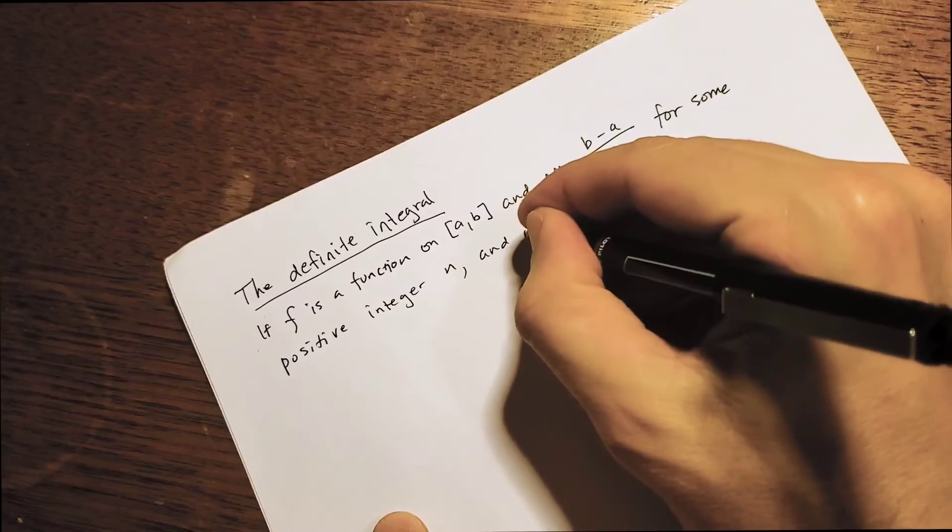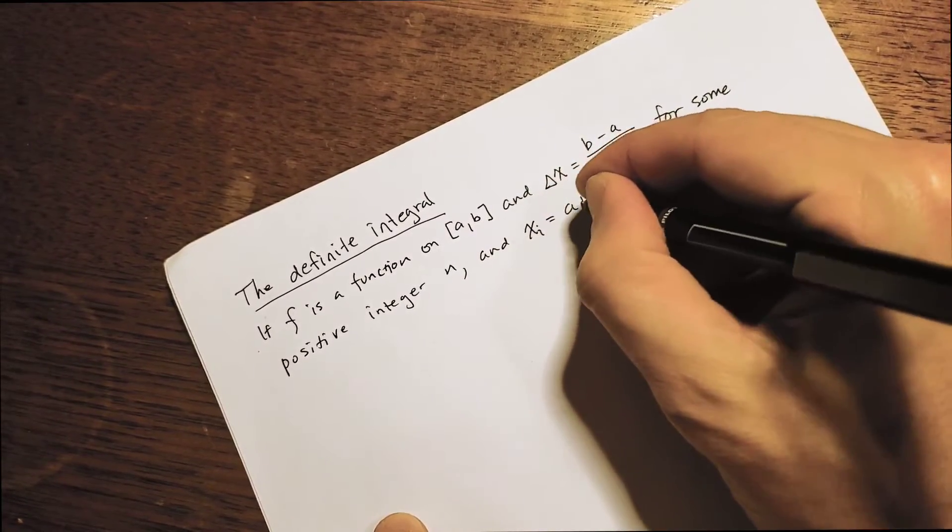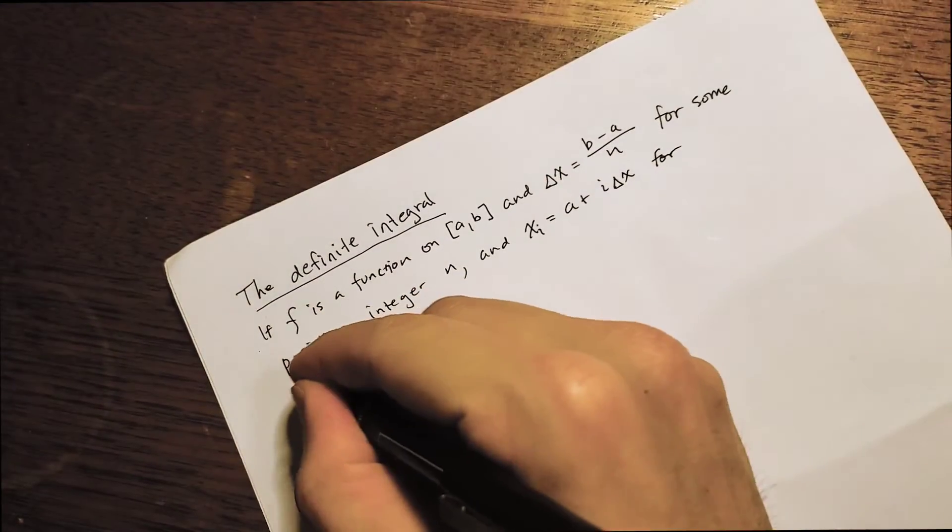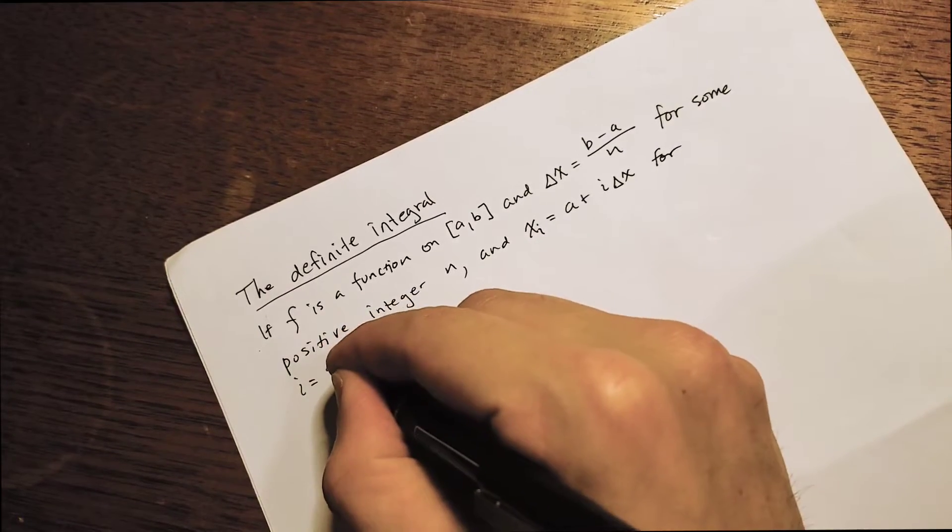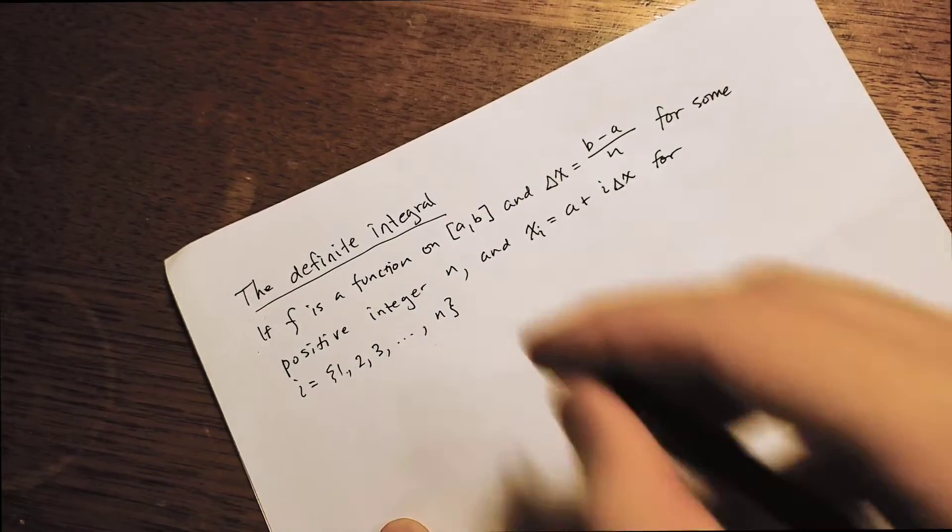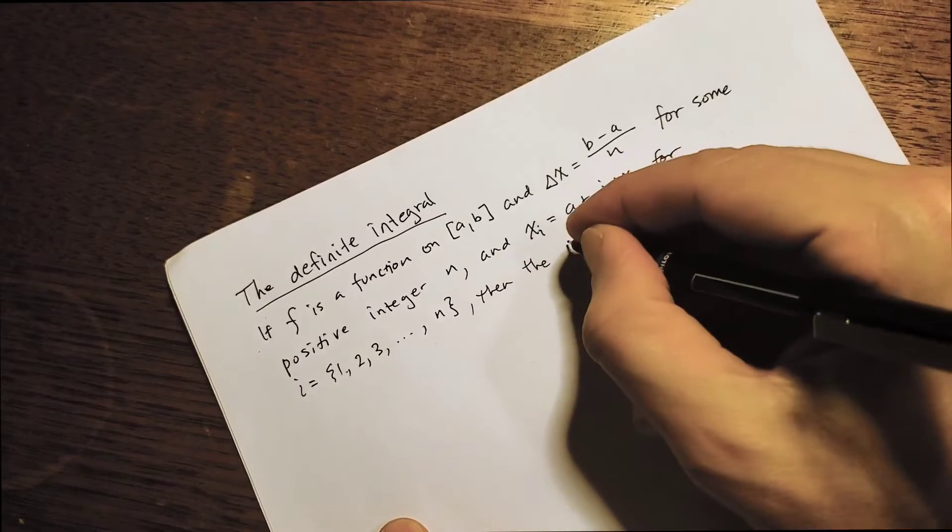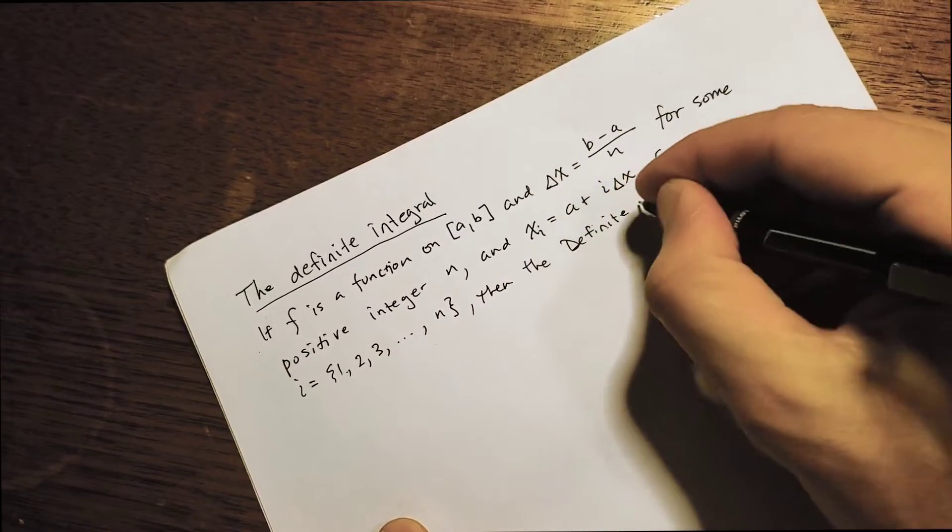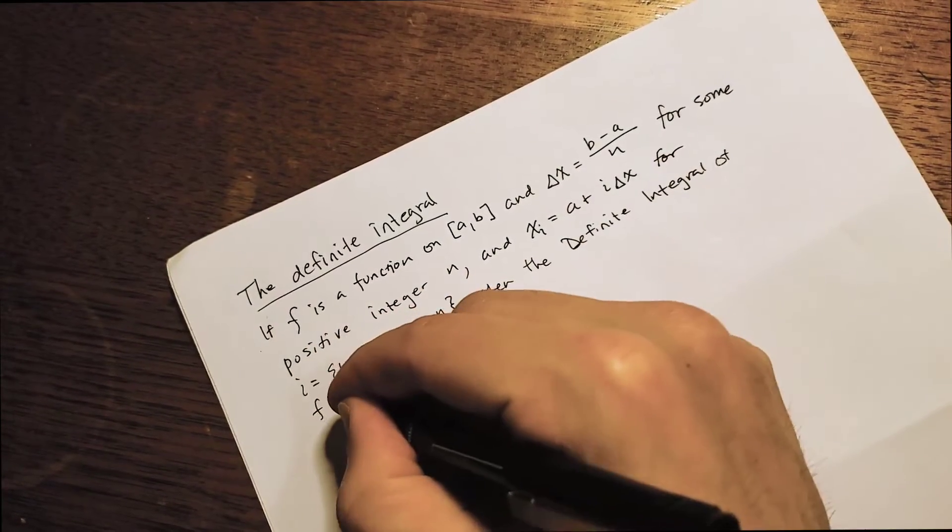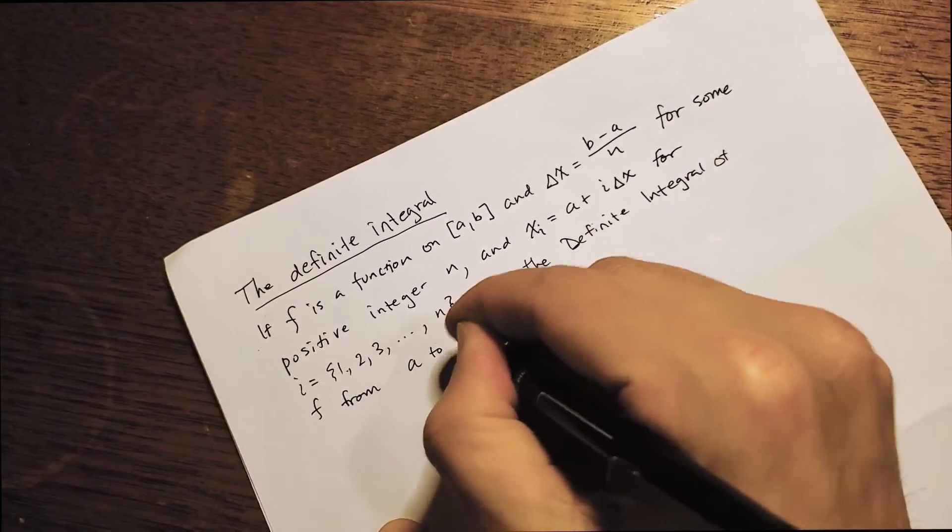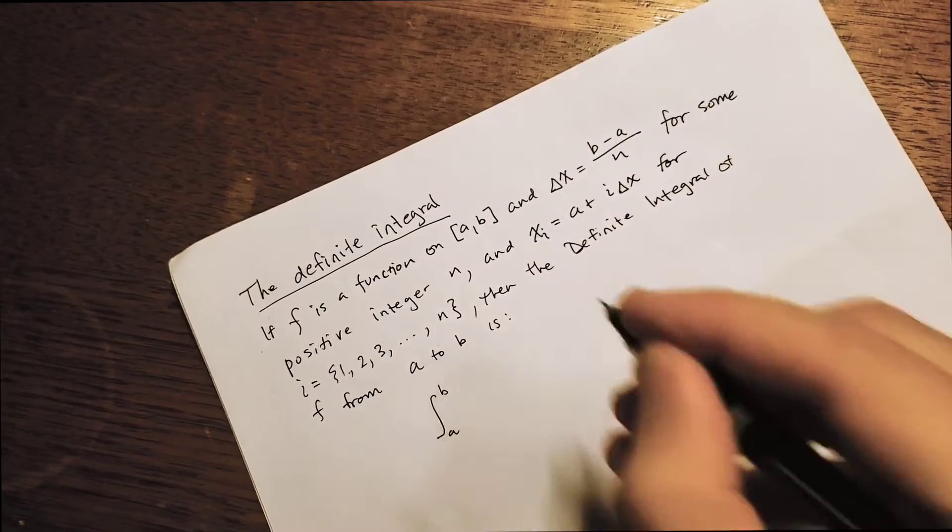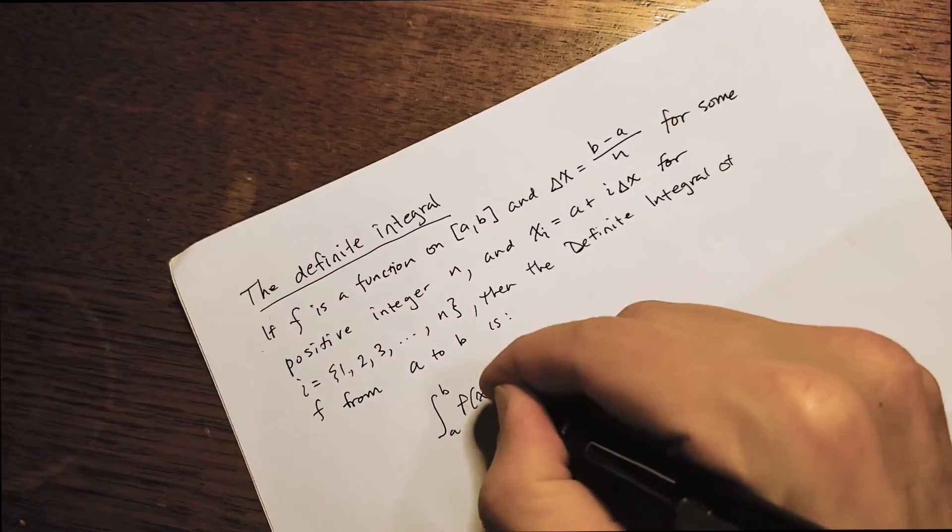And x sub i is going to be a plus i delta x for i equals the numbers 1, 2, 3. It's just going to cycle through the integers from 1 up to n. Then the definite integral of f from a to b is, and here's our definition, we have this new symbol, this integral sign, it would be f of x dx.